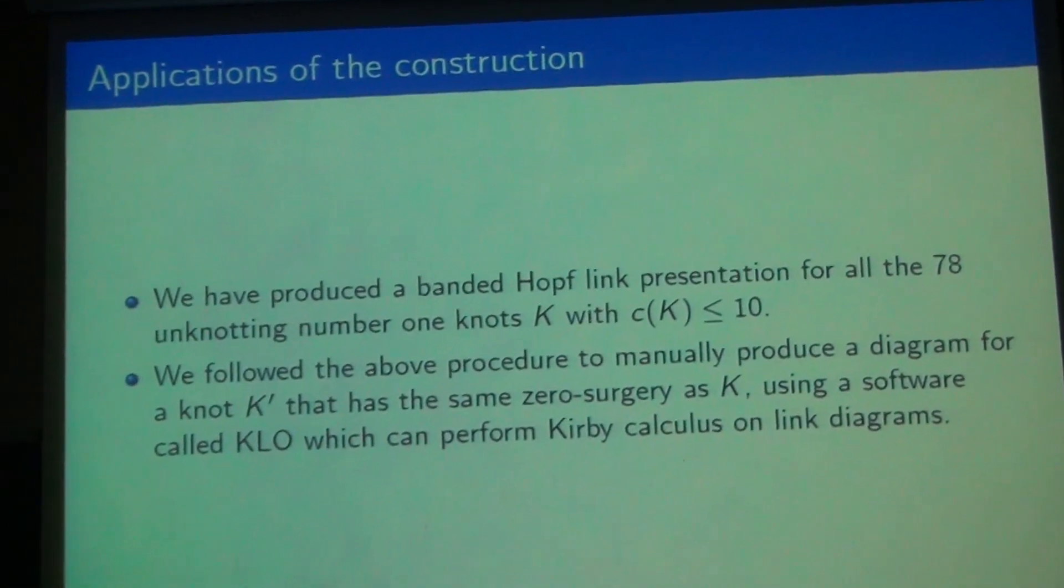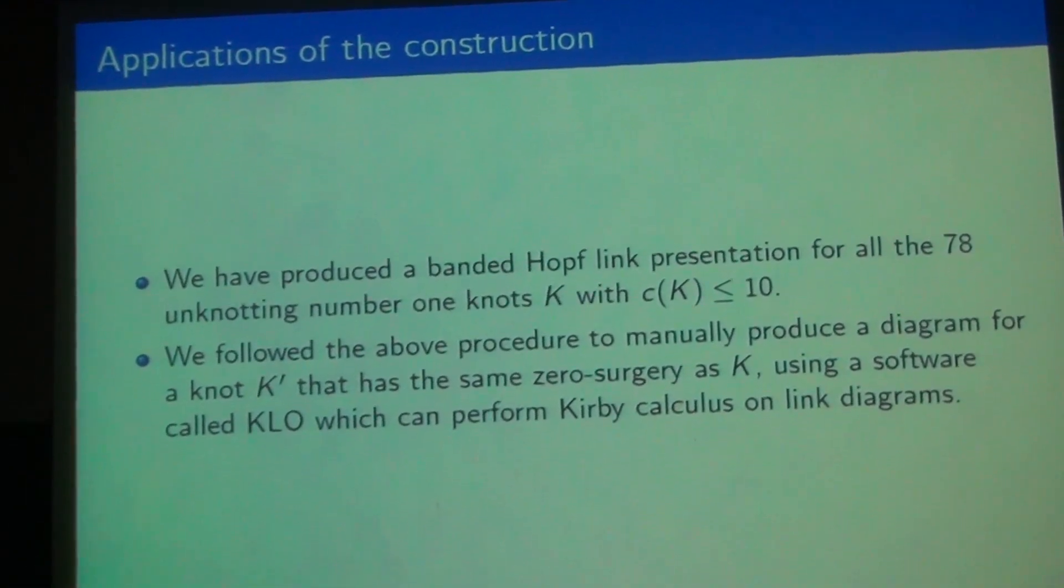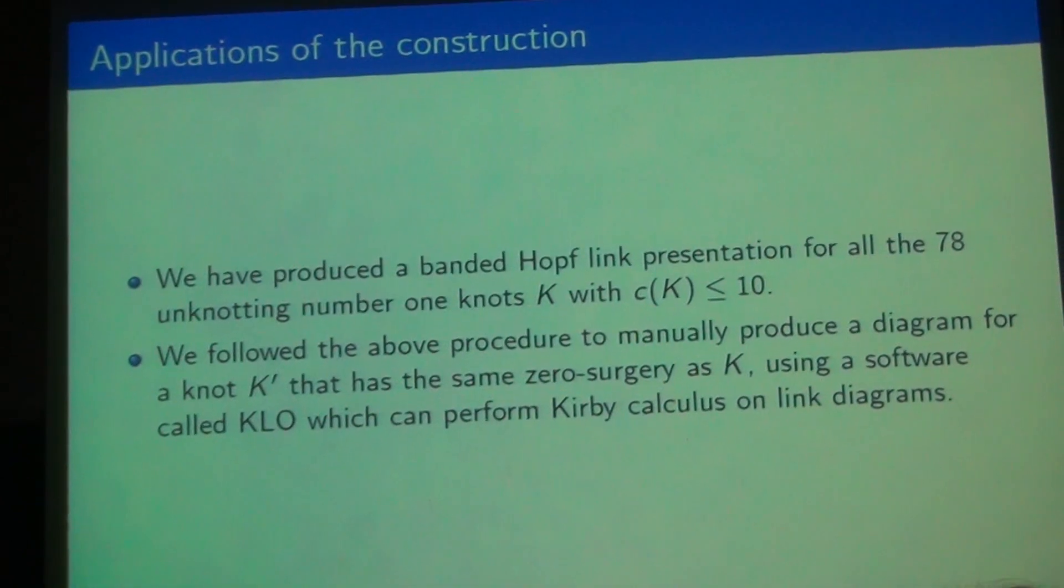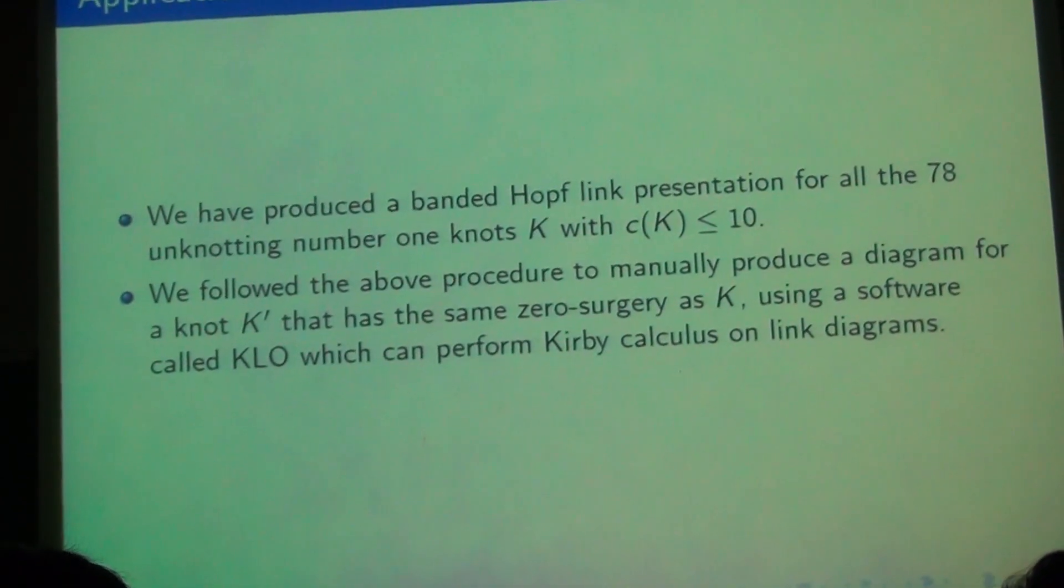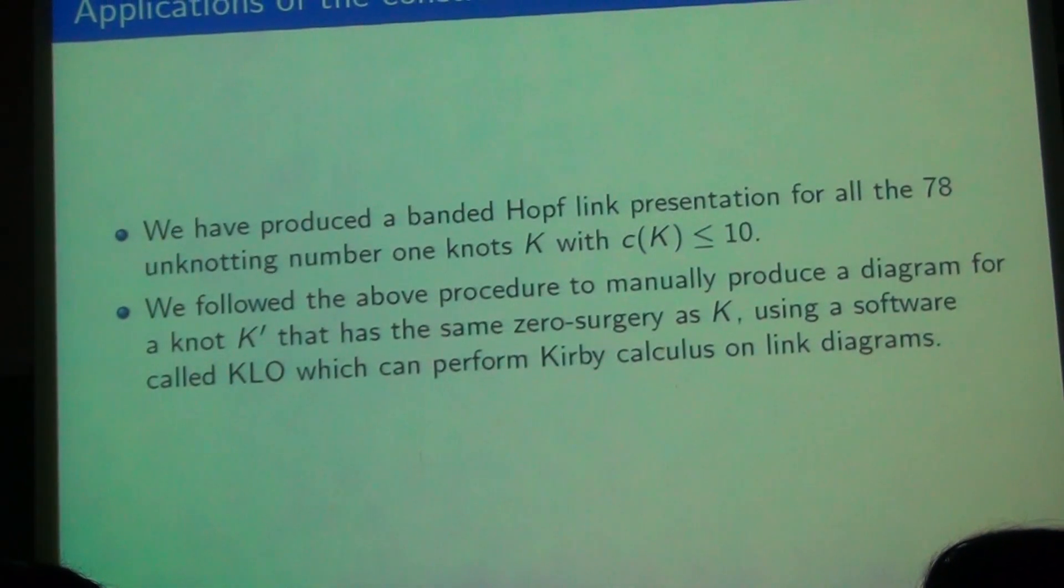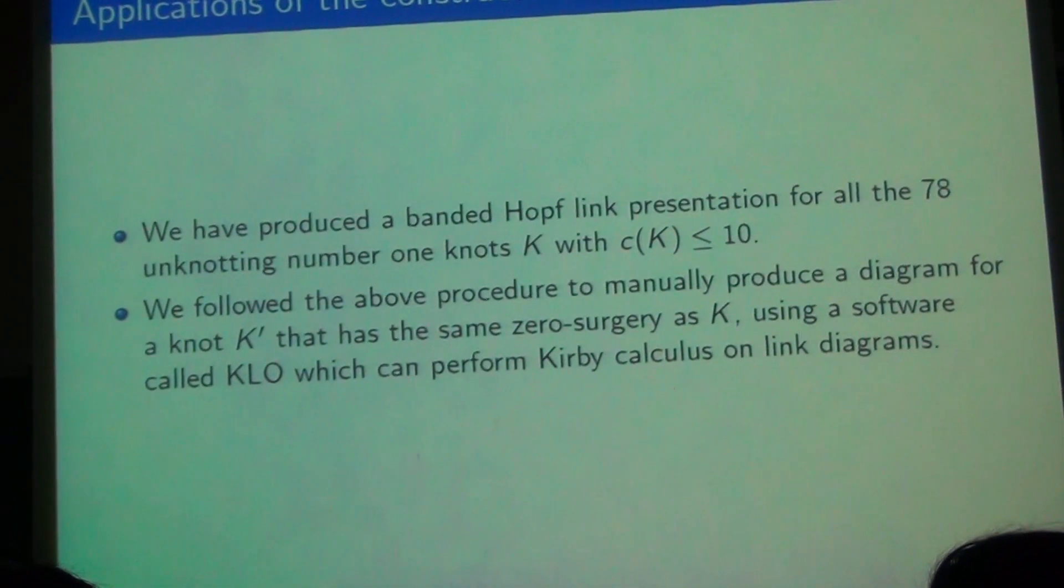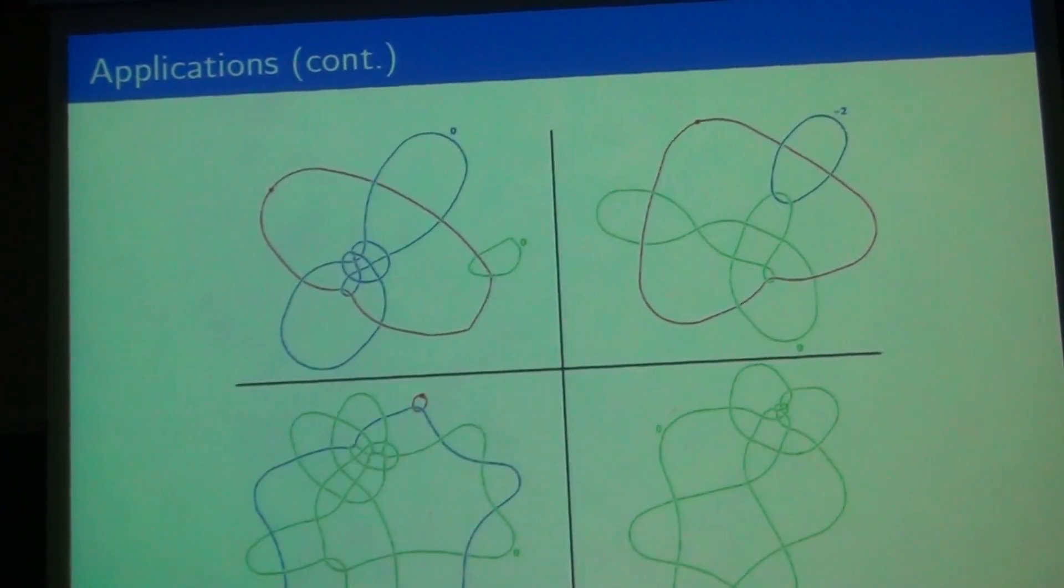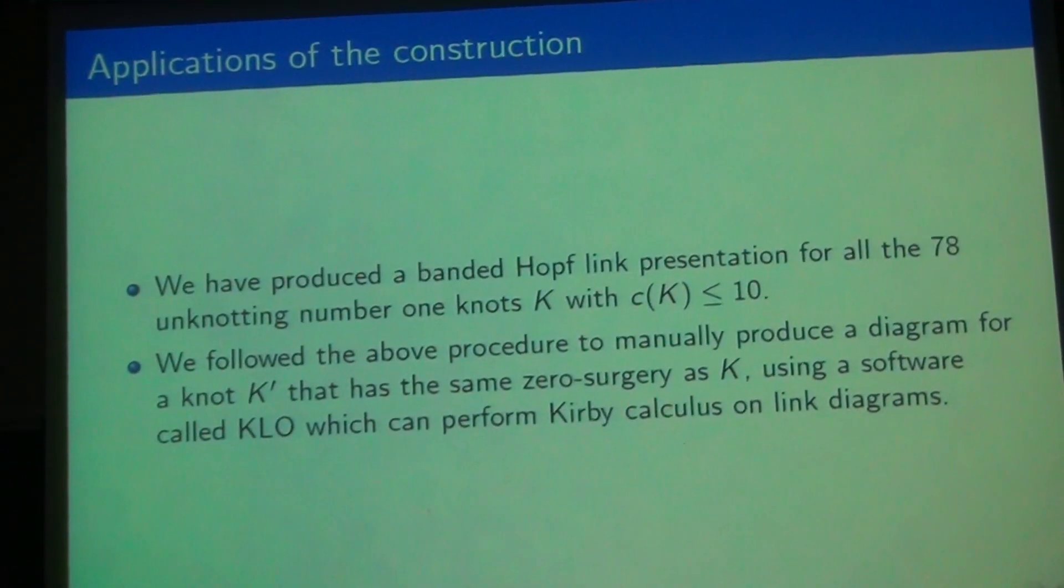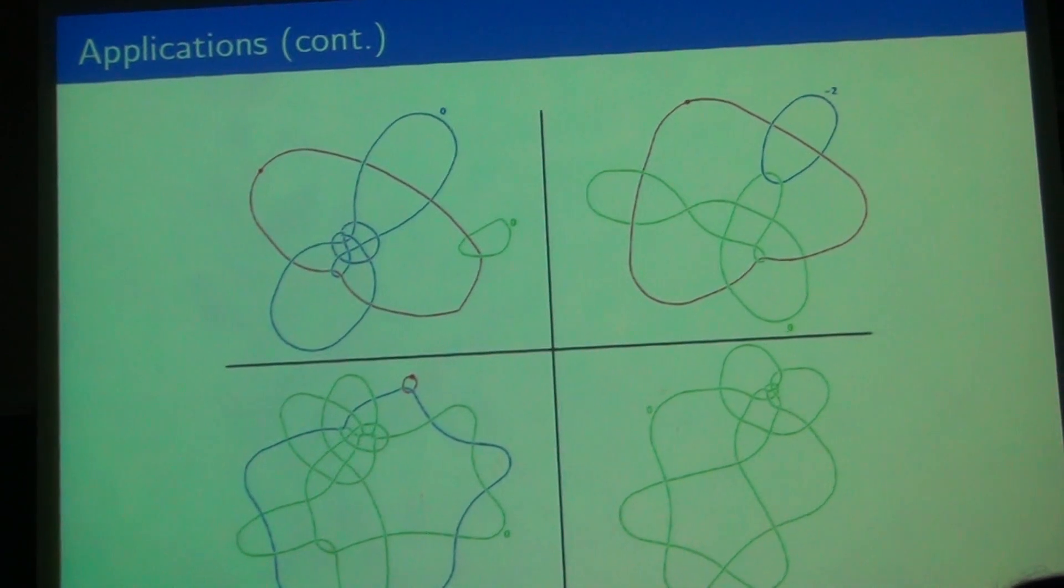So the first thing that we did was to produce a banded hoplink presentation for all the 78 tabulated knots with unknotting number one, having crossing number less than or equal to 10, because our idea was to apply the dualist construction the way we adapted to those knots and produce a knot with the same zero surgery as them. We used a software called KLO, Kirby Calculator, and in the next slide, we can see the screenshots of our work.